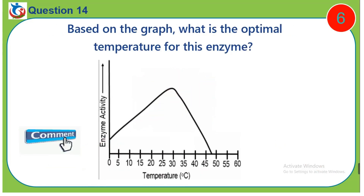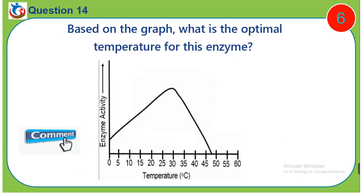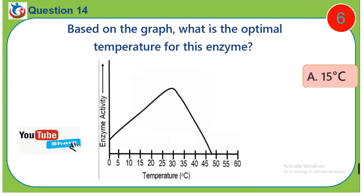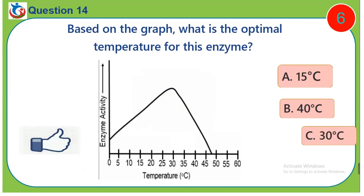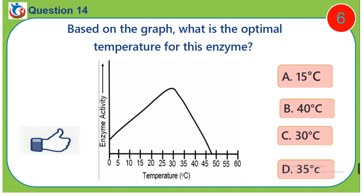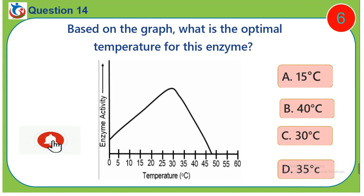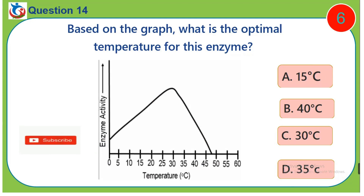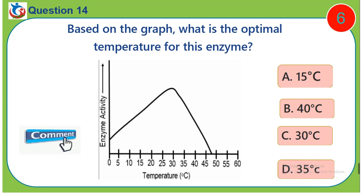Question 14. Based on the graph, what is the optimal temperature for this enzyme? A. 15 degrees Celsius. B. 40 degrees Celsius. C. 30 degrees Celsius. D. 35 degrees Celsius.